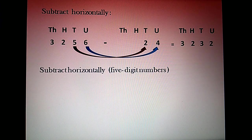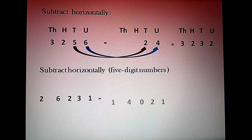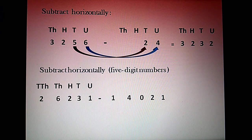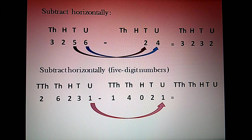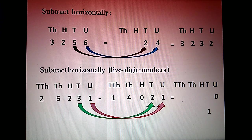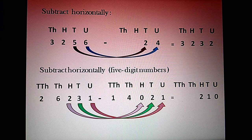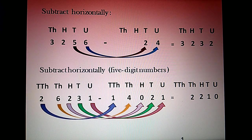Now we will subtract horizontally using 5-digit numbers: 26,231 minus 14,021. We write the place values — 10,000s, 1,000s, 100s, 10s, and units. Starting from units place: 1 minus 1 is 0. Tens place: 3 minus 2 is 1. Hundreds place: 2 minus 0 is 2. Thousands place: 6 minus 4 is 2. Ten-thousands place: 2 minus 1 is 1. So our answer is 12,210.